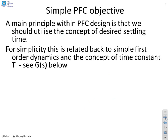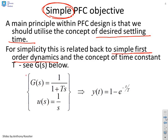The key thing is we have a concept in our head of how fast do we expect the output to go from the start point to the end point. And PFC wants to use this concept, the concept of desired settling time, or how fast do we go from where we start to where we finish. For simplicity, what PFC does is it relates this back to simple first order dynamics. A key underlying part of PFC is you want to keep things simple, and that's why we're using first order models. So here's the first order model, G equals 1 over 1 plus TS. I've given it a step input, 1 over S.